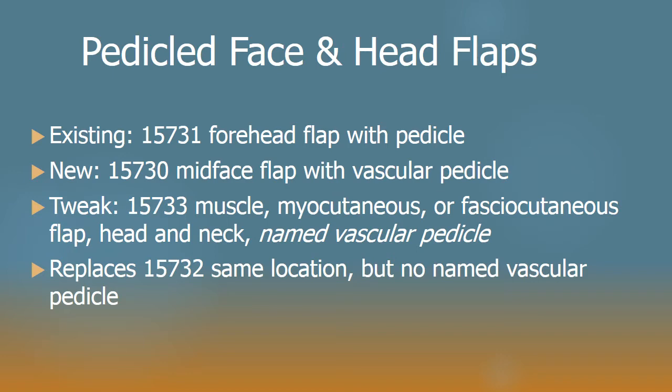A pedicle flap — a pedicle is a stalk, and in that stalk is contained at least one artery, one vein, and usually some nerves. There is an existing code, 15731, which is the forehead flap with pedicle. That's reconstruction of the forehead with a flap from elsewhere on the head and neck, commonly the scalp, which is a fairly inconspicuous area from which a flap can be harvested, lifted up, and swung into place to reconstruct the forehead.